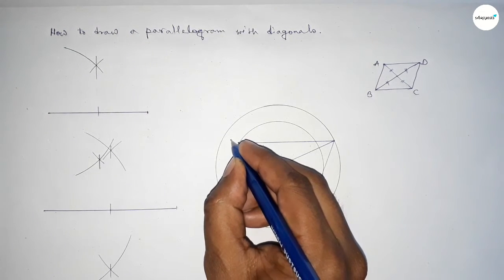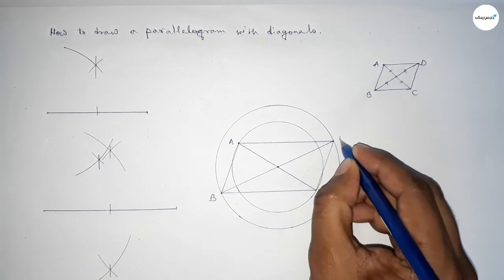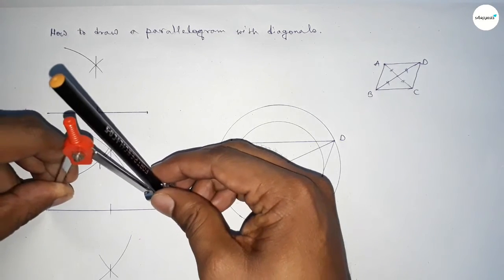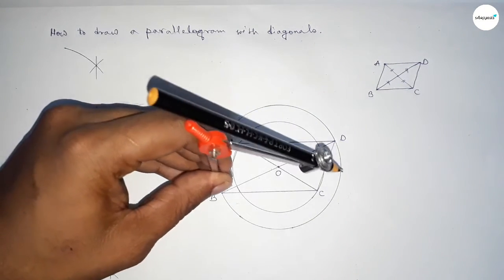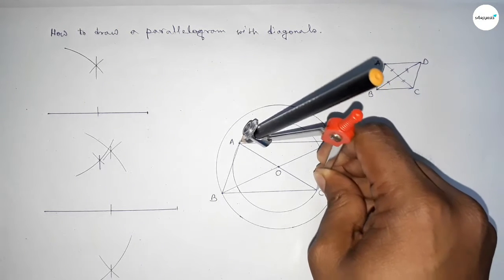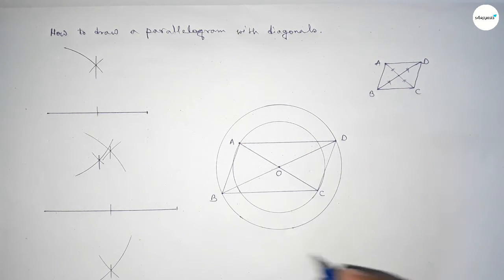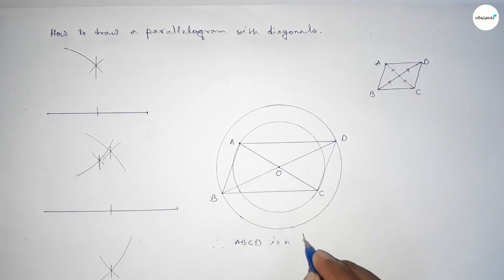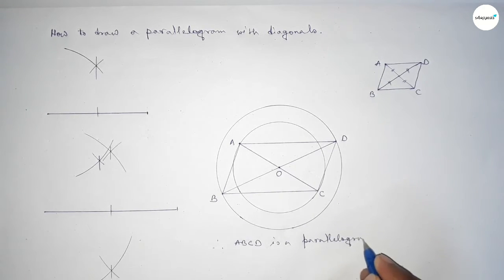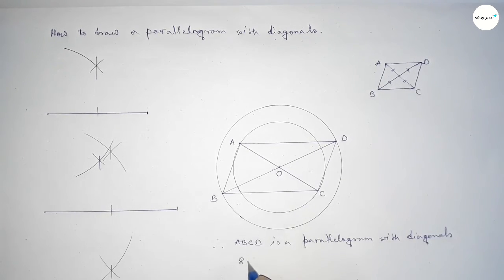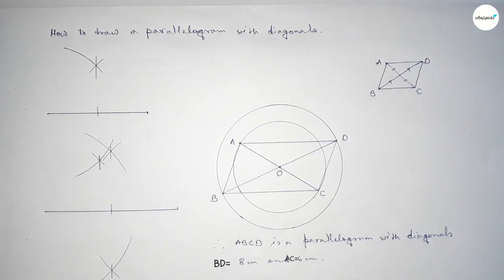Joining all sides — this length and this length are equal. The vertices are labeled A, B, C, D with center point O. Checking diagonal BD equals 8 centimeters — perfect. Checking diagonal AC equals 6 centimeters — also perfect. Therefore ABCD is a parallelogram with diagonals AC and BD of length 6 centimeters and 8 centimeters. That's all, thanks for watching!